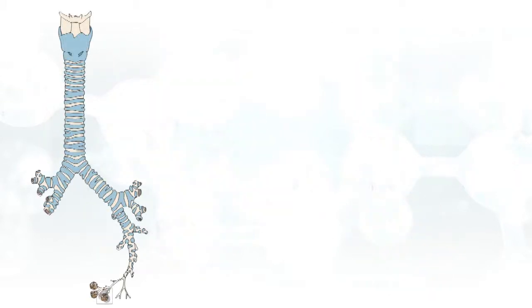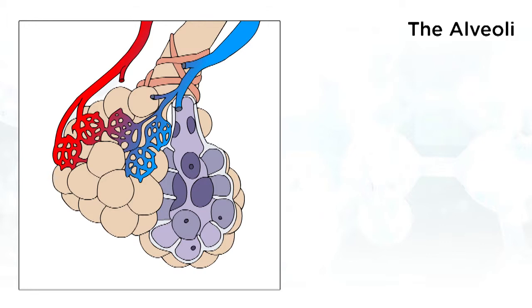Eventually air reaches the alveoli. This is where gas exchange takes place. Alveoli are clusters of air sacs that look like bunches of grapes. They allow for oxygen to get into our blood and for carbon dioxide to leave the blood. The oxygen is then transported to our tissues that require the oxygen to make ATP, and the CO2 is transferred and expelled out of our system and into the atmosphere.